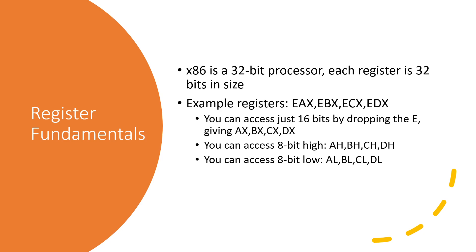A key note is that the E stands for extended, and it indicates that we're accessing all 32 bits of the register. With x86, there are interesting features where we can actually access just specific bits of the register. For example, if you wanted to store just 16 bits, you can drop the E and just reference AX, BX, CX, or DX — removing the E allows you to specify just 16 bits of the register rather than using the whole 32 bits.